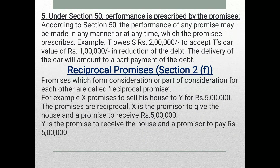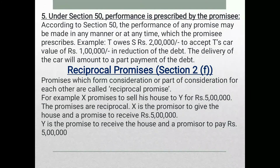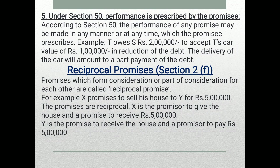Under Section 50, the manner and time of performance are as prescribed by the promisee. Performance must be made within the agreed time period. For example, a car worth one lakh rupees is accepted, and the car is delivered with the corresponding payment — this is an example of performance as prescribed.